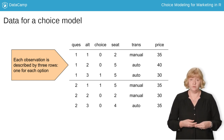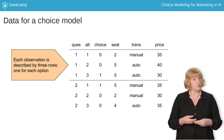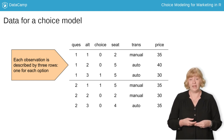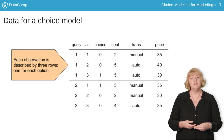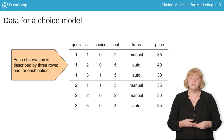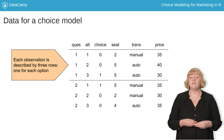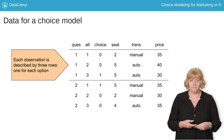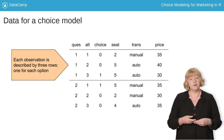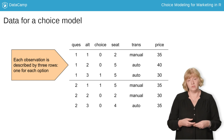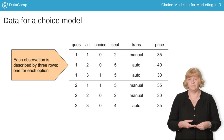To keep track of which rows belong to which observations, we have columns called Quest, short for Question, and Alt, short for Alternative. The first three values of Quest are all 1s, indicating that these three rows all belong to Question 1. The values of Alt are 1, 2, and 3, indicating that these are the three alternatives the customer chose from.